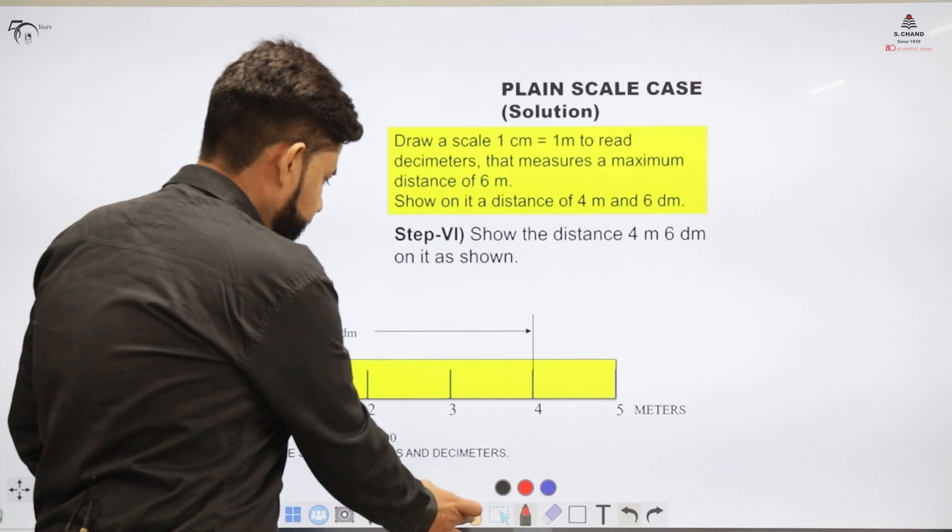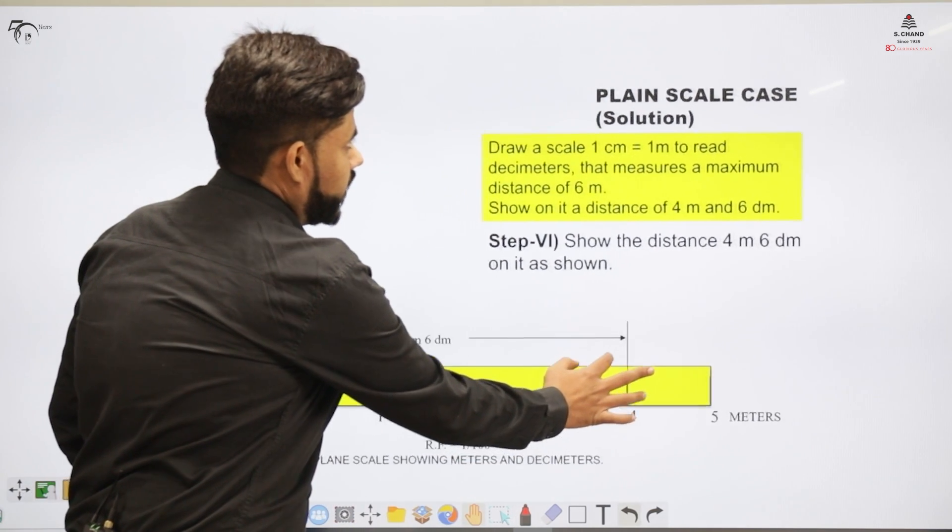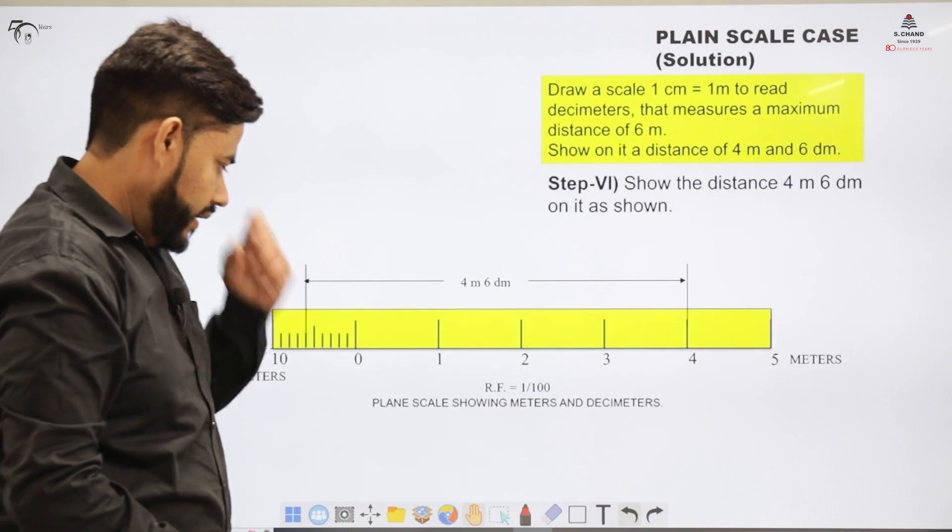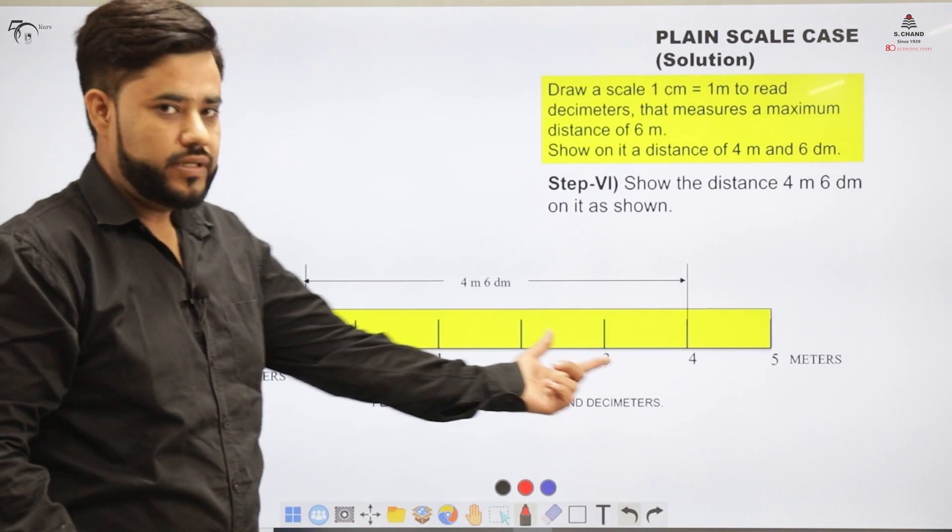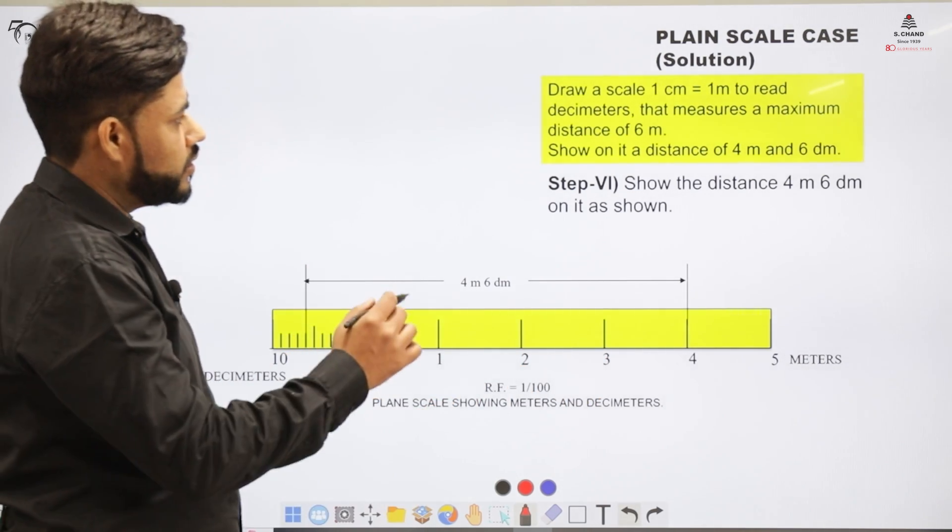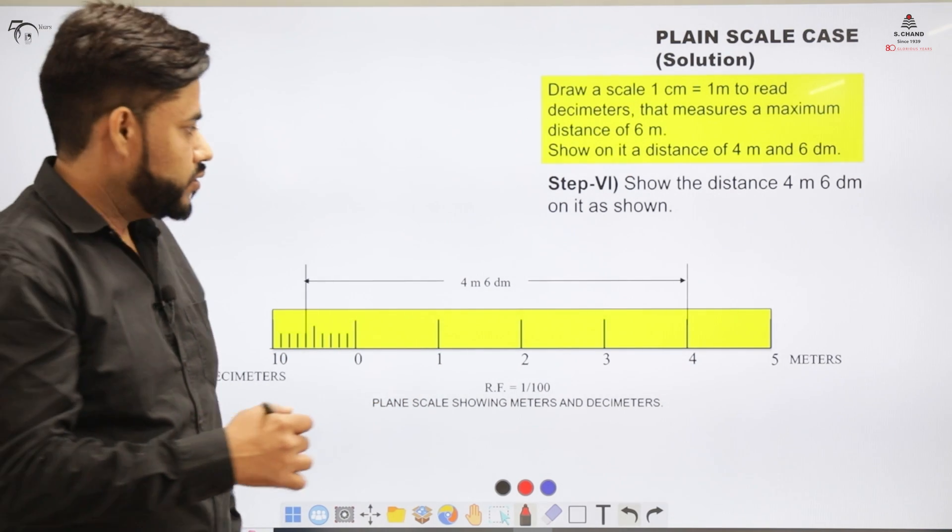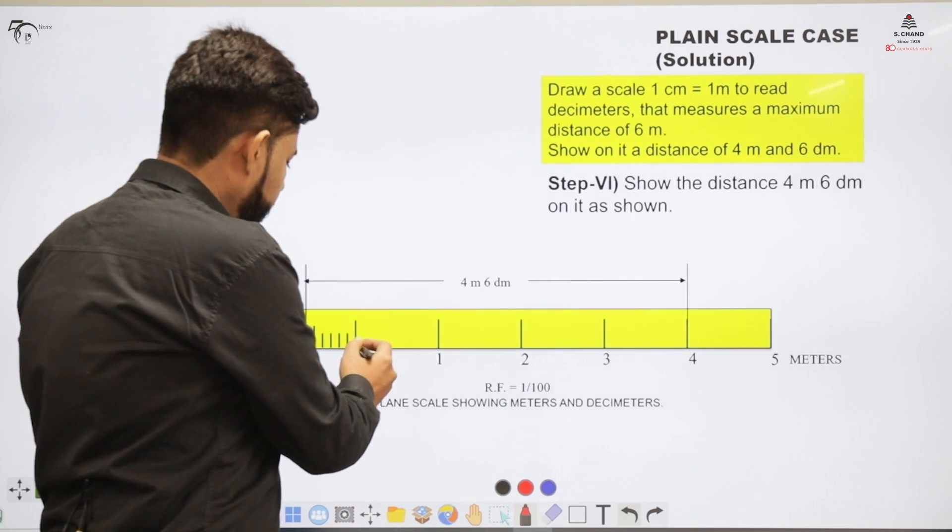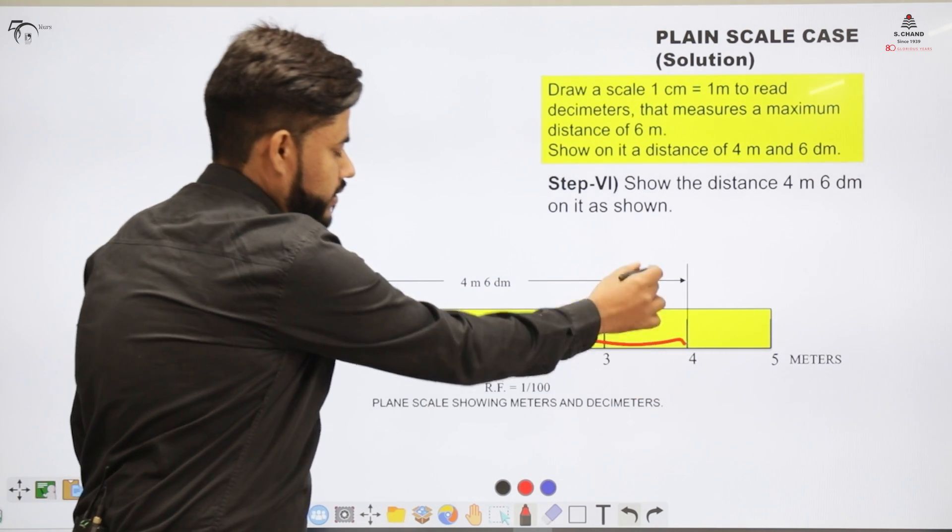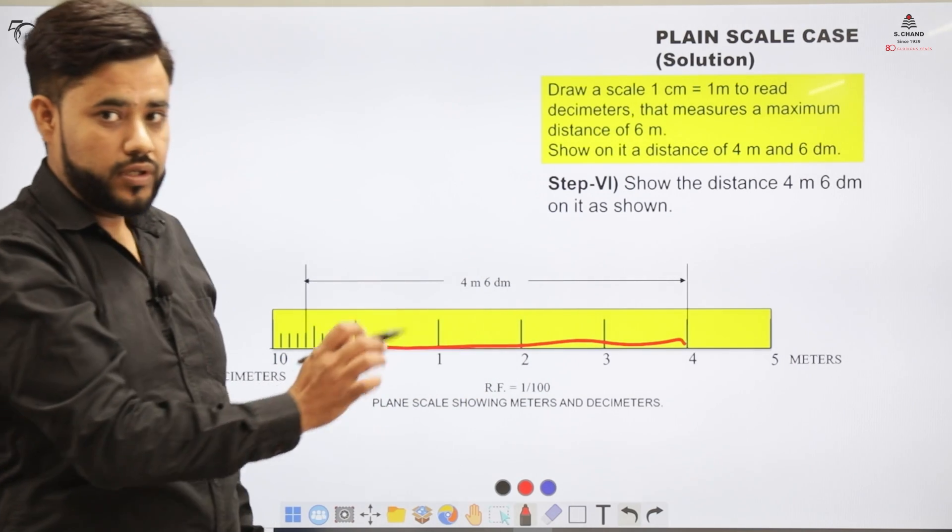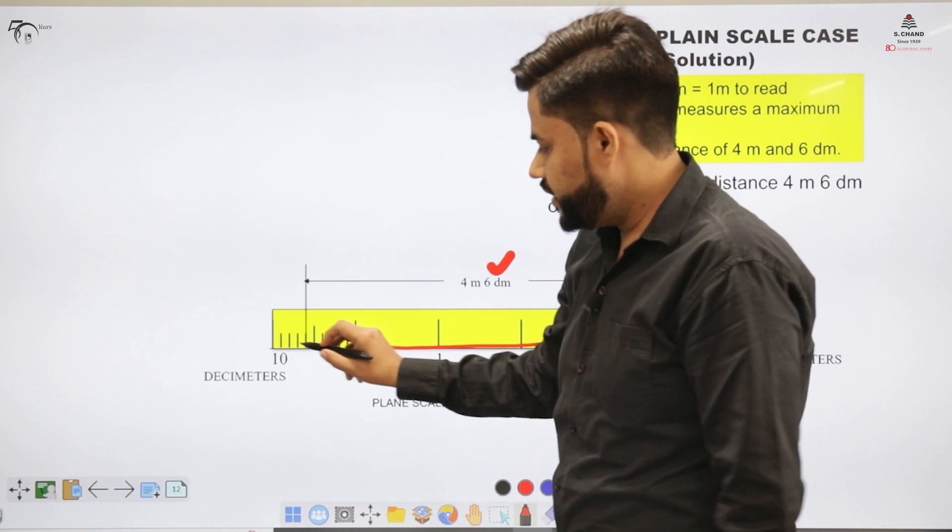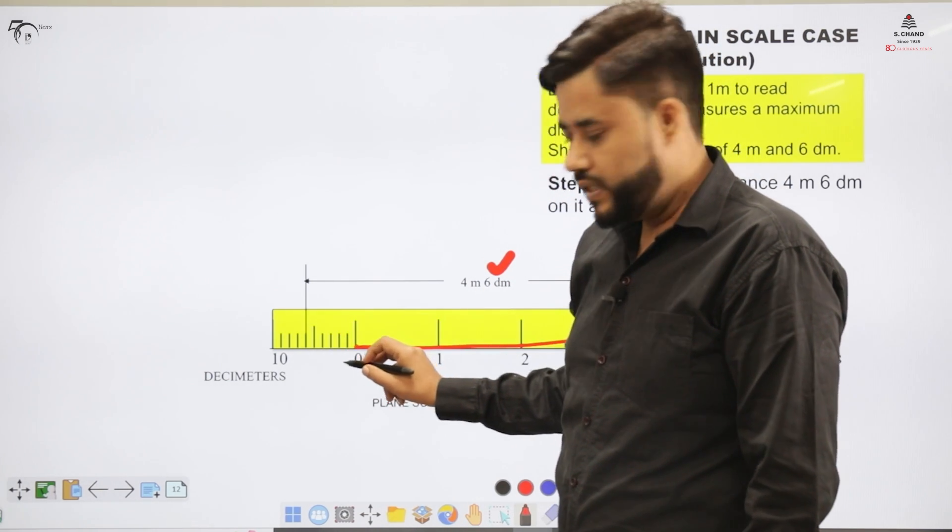Now in order to show the distance part, what is to be done? We have the meter division and we have the decimeter division. So in order to indicate 4 meter and 6 decimeter, 4 meter is this value from 0 to 4, this division that indicates 4 meters and right from here you have 6 decimeter. So decimeter is to be counted from this decimeter scale.